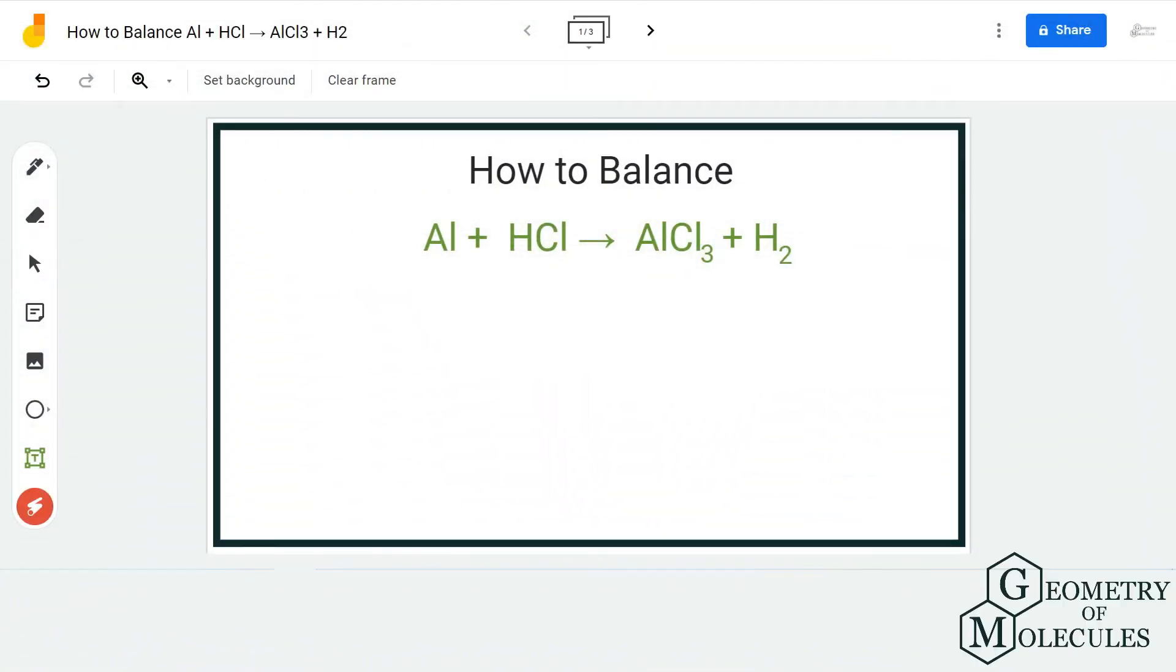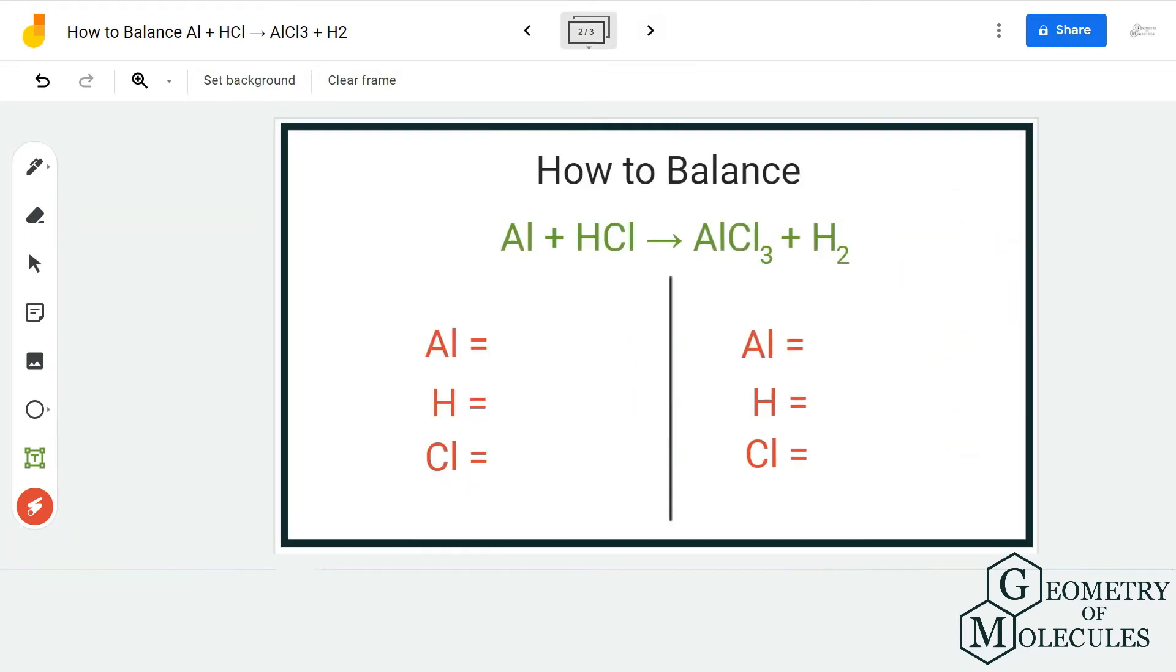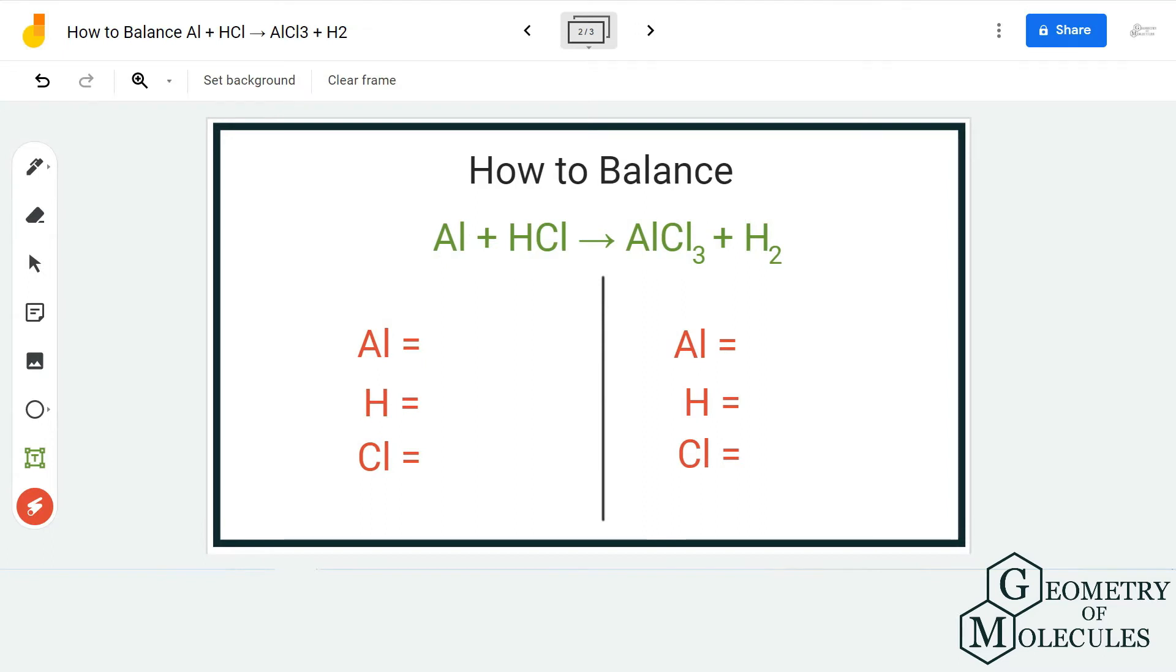Hi guys, welcome back to our channel. In today's video we are going to balance this equation where we have aluminum and HCl on the reactant side, AlCl3 and H2 gas on the product side. To balance this equation we are first going to count the number of atoms on both reactant and product sides.